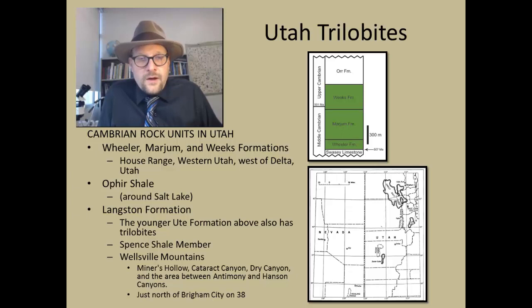If you're closer around Salt Lake, the Ophir Shale does produce some trilobites. Another place where trilobites have been documented is the Langston Formation and the Younger Ute Formation that also has trilobites, as well as the Spence Shale member. Many of these sites are located along the Wellsville Mountains, just sort of north of Brigham City, Utah, in western Utah. So many of the sites in western Utah contain trilobites.